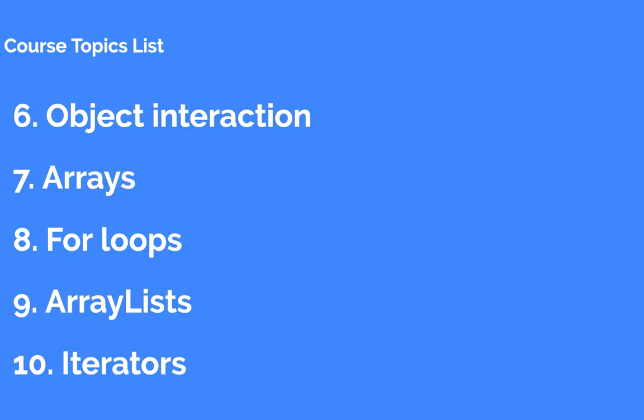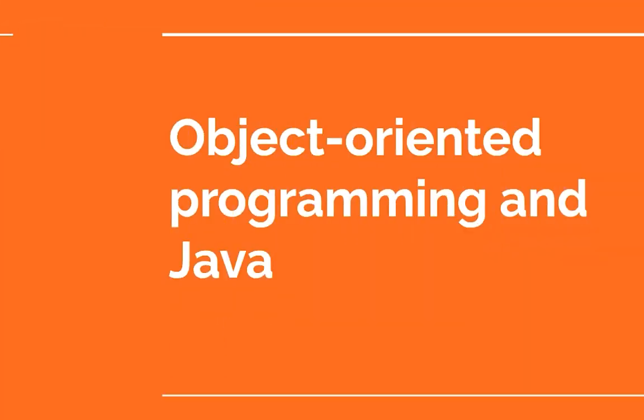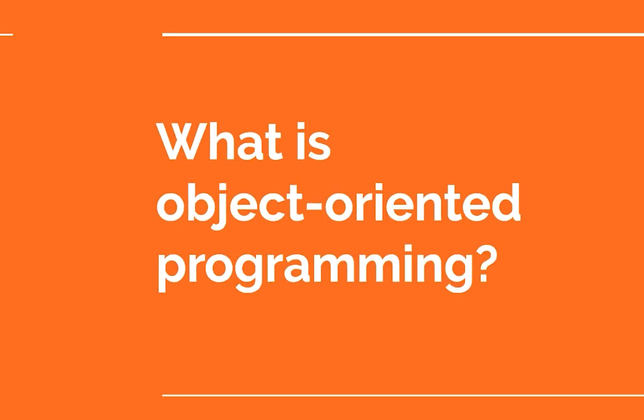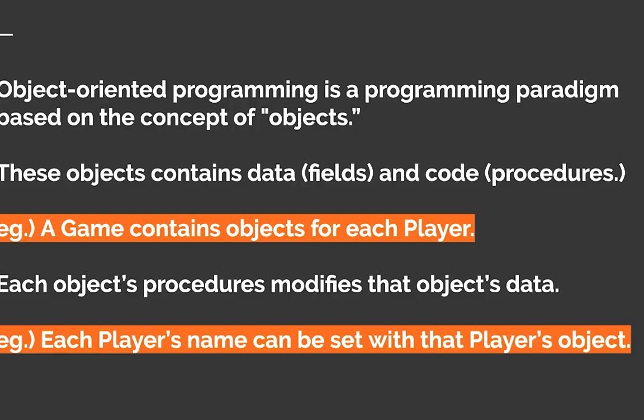Welcome back to our Java tutorial series. In this lecture, we're going to be answering the questions: What is object-oriented programming, and what is Java? Object-oriented programming is a paradigm based on the concept of objects. You may have heard the term object-oriented programming language, which means that programming language is able to use the concept of objects.